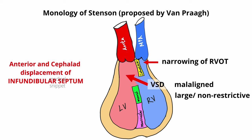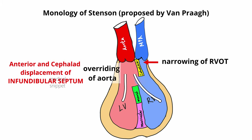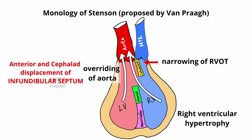As the infundibular septum is displaced anteriorly, the aortic root is also displaced along with it, causing overriding of the aorta over the interventricular septum. Thus, the aorta receives blood from both the right and left ventricles. The last feature is right ventricular hypertrophy, due to the RVOT obstruction and large VSD. This concept of monology explains all four features of TOF.